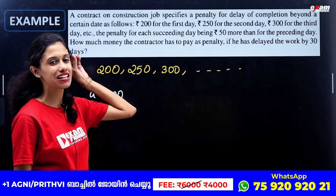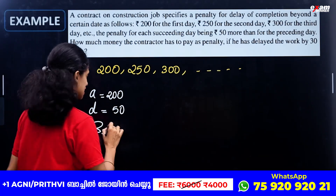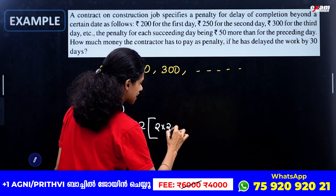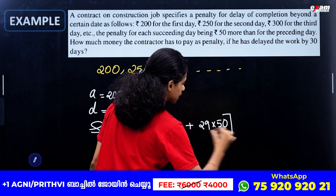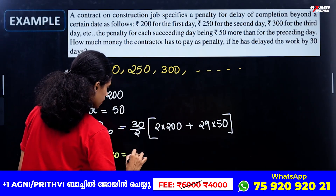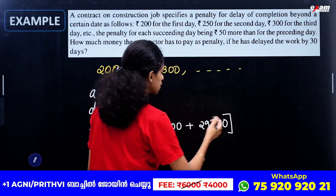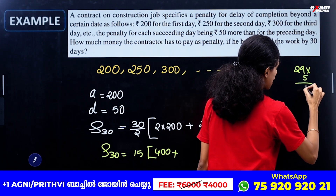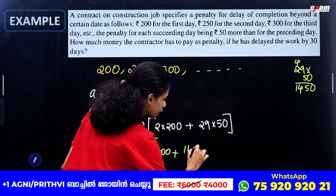If there is a 30-day delay, we need to find the total penalty. S30 is equal to 30 by 2 into 2a plus n minus 1 into d, which is 15 into 2 into 200 plus 29 into 50. So S30 is equal to 15 into 400 plus 29 into 50. 29 into 50 is equal to 1,450. So it becomes 15 into 400 plus 1,450, which is 15 into 1,850.